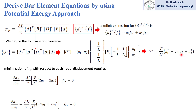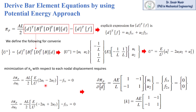In the next step, we minimize the total potential energy equation with respect to each nodal displacement and set it equal to zero. This is the basic requirement of the potential energy method — differentiate the total potential energy expression with respect to each displacement and set it equal to zero. After simplification, these two equations can be written in matrix form as the stiffness matrix equation for a bar element, which is the same equation derived earlier by another method.